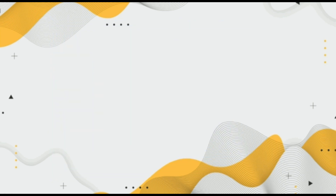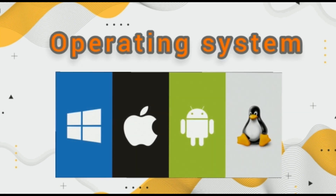Another kind of system software is the operating system. The operating system is a master program that has special qualities to access tasks like installing, booting up the computer, or using or deleting any software or document.